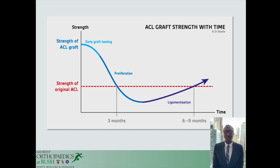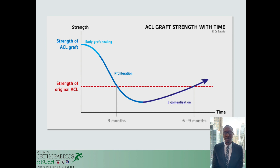Risk of graft failure is dependent on many factors including graft type, fixation method, tunnel positions, and concomitant injuries. Two time-dependent factors are graft strength and functional rehabilitation. Evidence has shown that graft strength is likely equivalent to the strength of the original ACL somewhere between 6 and 9 months, suggesting that most of these players' ACL grafts were at normal strength at their return.